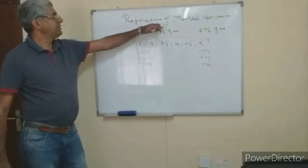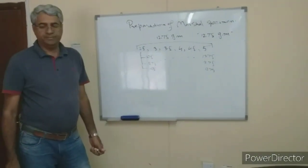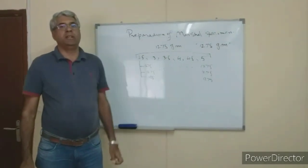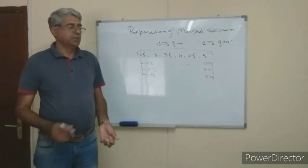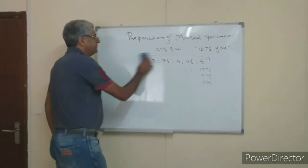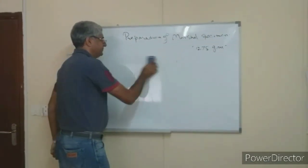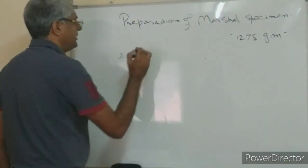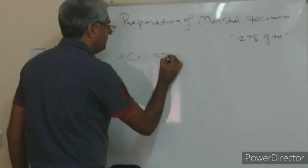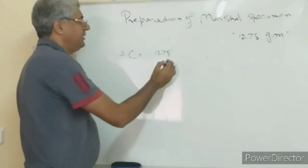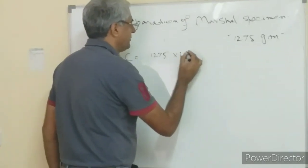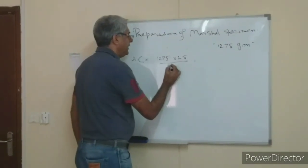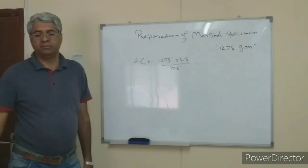Now I want to show you how we calculate the amount of asphalt content in order to make the mix. This calculation is very simple. If the total aggregate weight assumed is 1275 grams and I take a mix with 2.5% bitumen content, then the remaining 97.5% will be my aggregate.